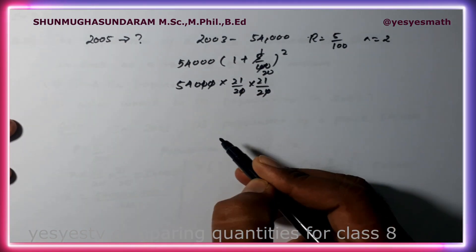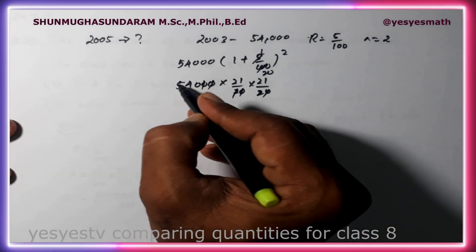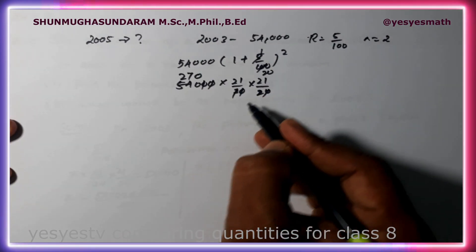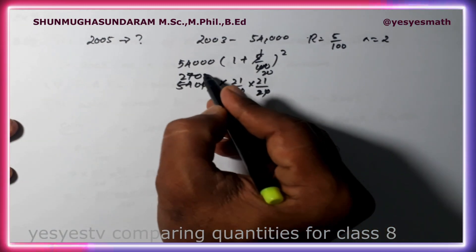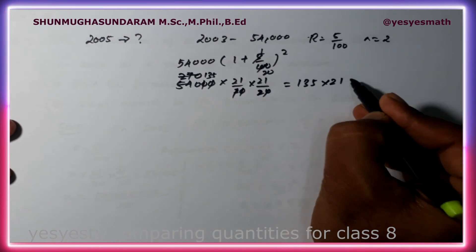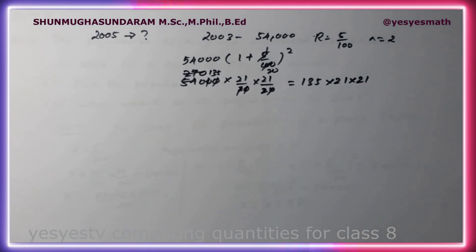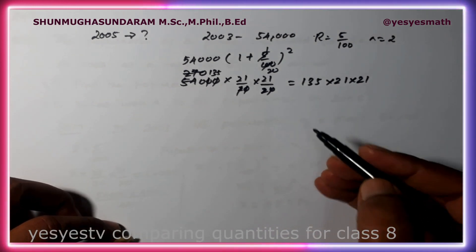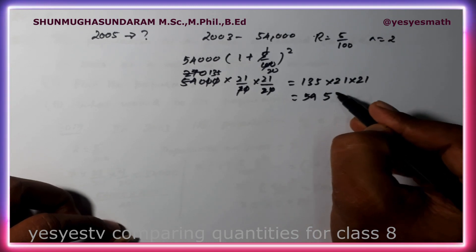The zeros get cancelled. 2 into 2 is 4. Working through: 135 into 21 into 21. The population rate of increase gives us 59,535.